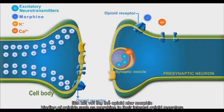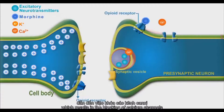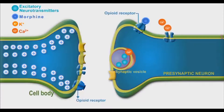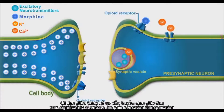Binding of opioids such as morphine to their internal opioid receptors disturbs the neuronal membrane action potential, which results in the blocking of calcium channels. A decrease in external calcium influx will significantly attenuate the pain sensation in transmission.